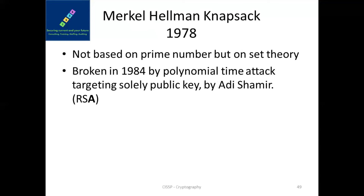The Merkle-Hellman Knapsack algorithm, released in 1978, was not based on prime numbers like RSA but on a different mathematical theory. It was broken by Adi Shamir — also one of RSA's inventors — using a polynomial-time attack targeting solely the public key. You don't need to go deep into what the polynomial-time attack is, but you should know that Merkle-Hellman Knapsack has been broken.